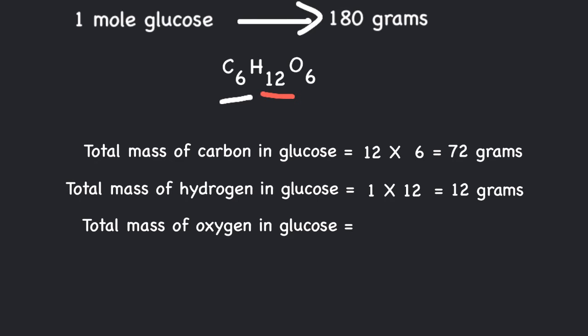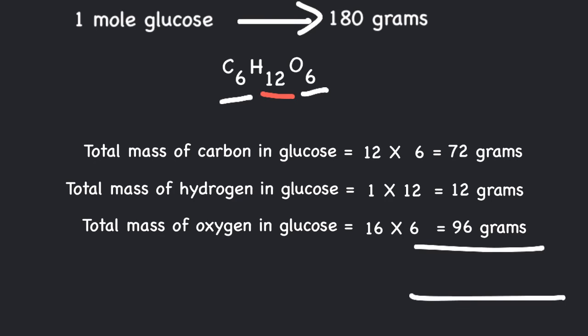If we add up these individual masses — 72 + 12 + 96 — we get the final mass: 180 grams. This is also called the molar mass.